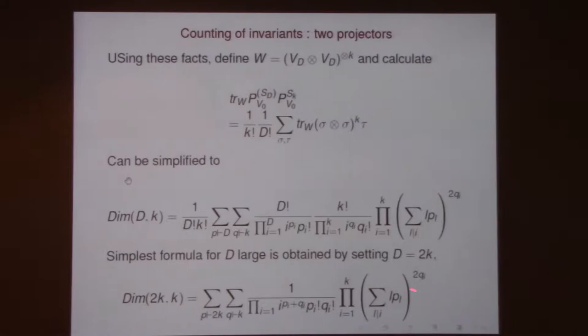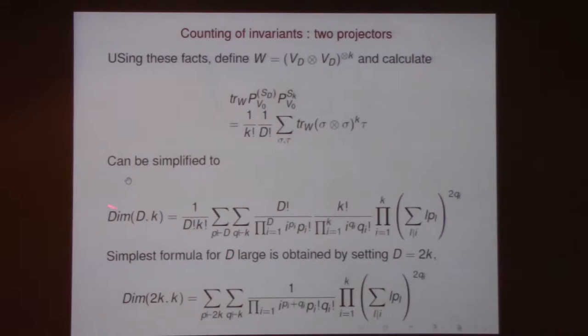Sigma is in S_D and tau is in S_K. This counting, which is a function of two parameters, when you have large D — S_D is like U_D — there will be a counting that is independent of D. For example, if you have degree k polynomials for traces of M, it's partitions of k — just a number of multi-traces with k matrices. For large D, this number will be independent of D, and D equals 2k will work.